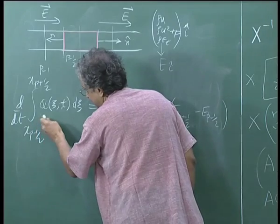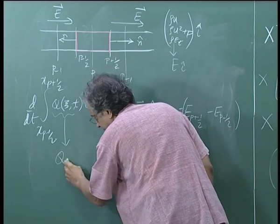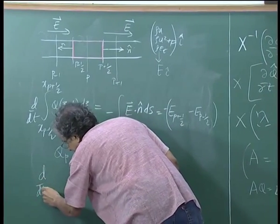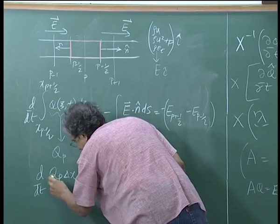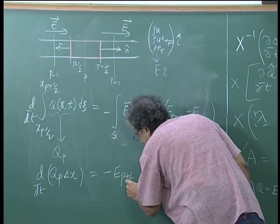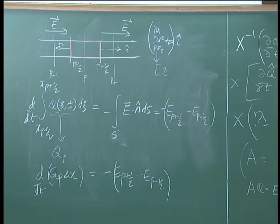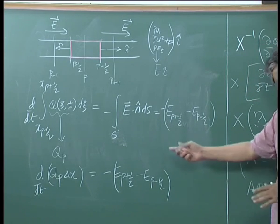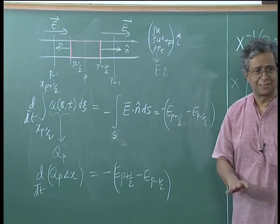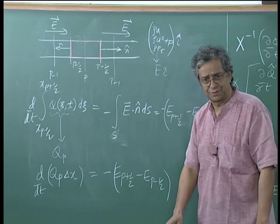I will replace the volume integral by an average value qP. So this becomes: d/dt(qP Δx) = −(EP+½ − EP−½). You can see the equivalence between the finite volume method and finite difference method — you get the same equation. But the difference is that here we have the fluxes at the intermediate points P+½ and P−½.